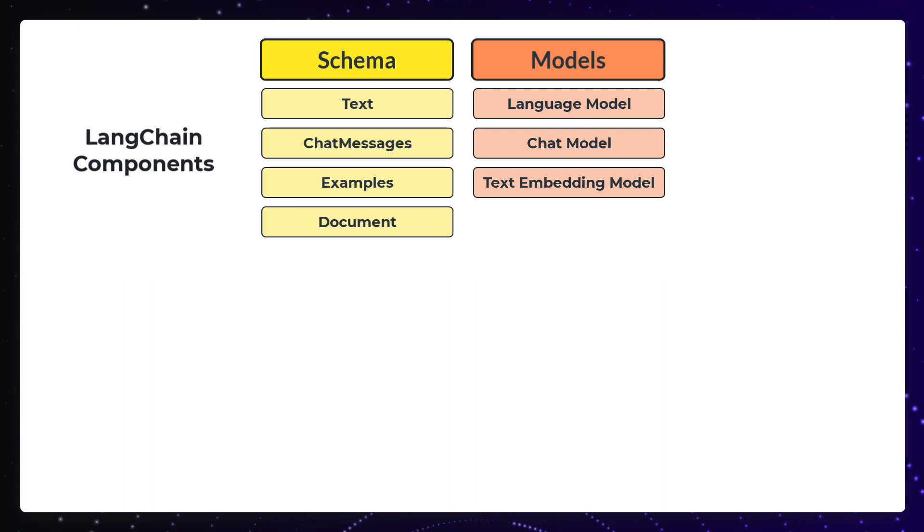Finally, there are text embedding models. These take text as input and return a list of floats as output, which is actually a vector representation of the data.